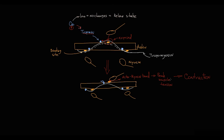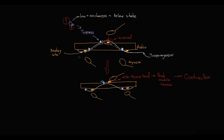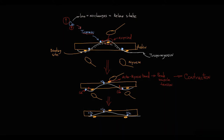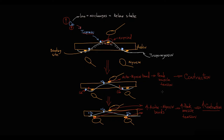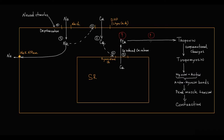The key concept is: the higher the calcium concentration in the cytosol, the more calcium molecules bind to troponin; the more troponin affects tropomyosin conformation; the more binding sites on actin become exposed; the more myosin molecules bind to actin; and the higher the number of actin-myosin bonds, the higher the peak muscle tension, and therefore the higher the force of contraction. Essentially, higher cytosolic calcium equals higher force of contraction.